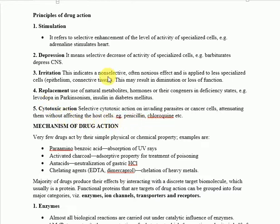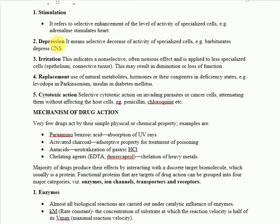The principle of drug action and mechanism of drug action — there are very few drugs that act by their physical and chemical properties. For example, para-aminobenzoic acid, which absorbs ultraviolet rays, and activated charcoal, which absorbs poison. These drugs act directly in the stomach — they don't bind or stimulate any secondary messenger, but act directly. This is a very small group of drugs acting by physical and chemical properties.